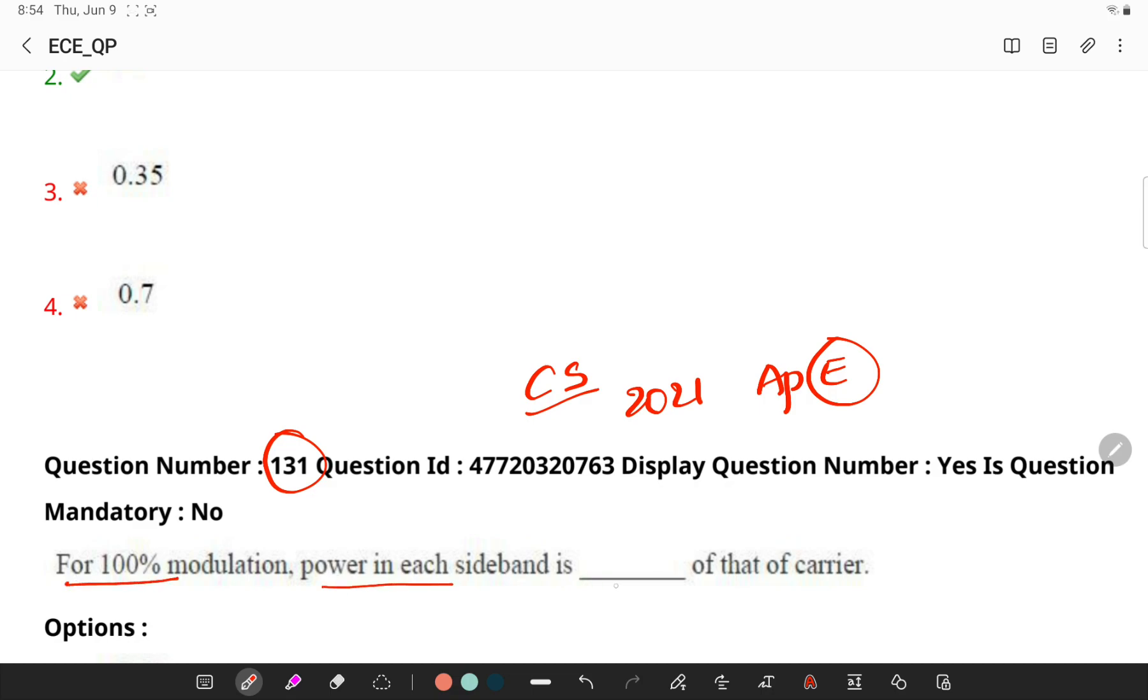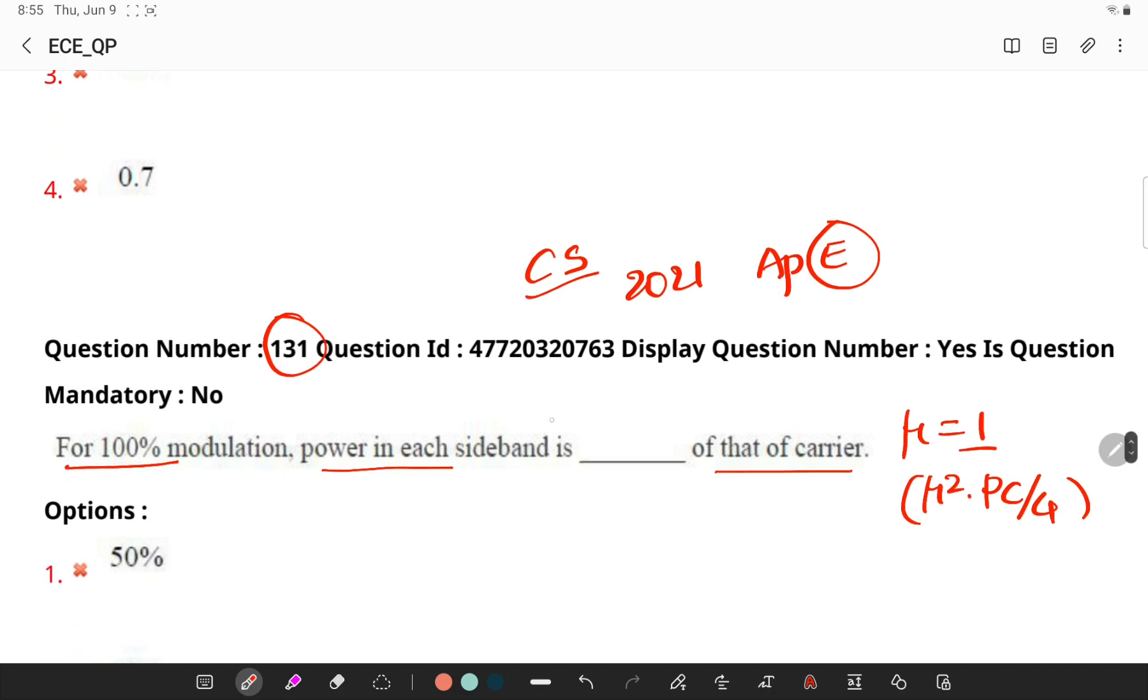For 100% modulation, power in each sideband is how much percent of carrier power? Remember when the modulation index is 1, you can remember that mu squared into PC by 4 is the power in each sideband. In this case, as mu is equal to 1, so I can simply say 1 into PC by 4, 1 squared into PC by 4.